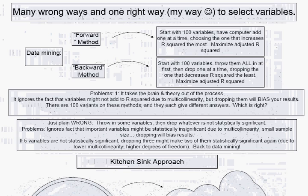There are many wrong ways and one approach I call my way to select variables. Let me say loudly and clearly: my way is not absolutely 100% correct — there are problems with it too. How people do things depends on how they were trained. One approach I don't like is data mining. Data mining does have its uses, but for me and the kind of work I do, I don't like it. Data mining is when you have a lot of data and you take the human element out of the modeling. Two common methods are called the forward method and the backward method.